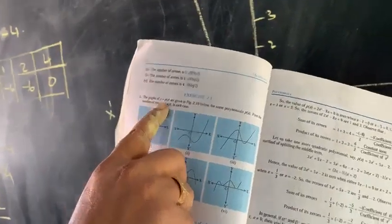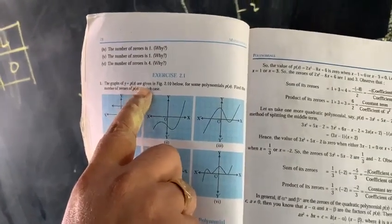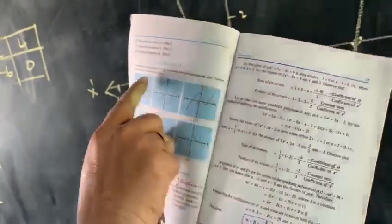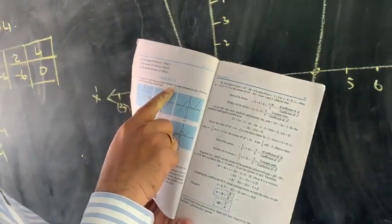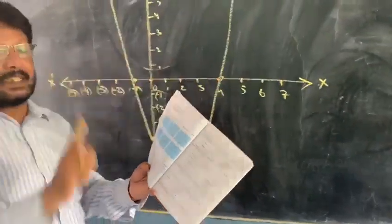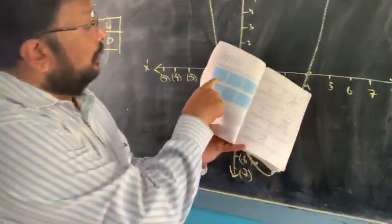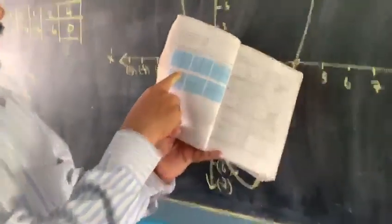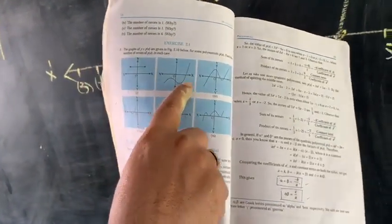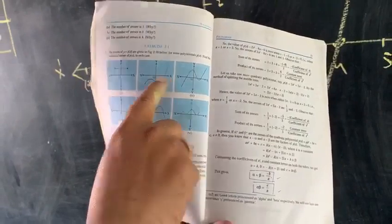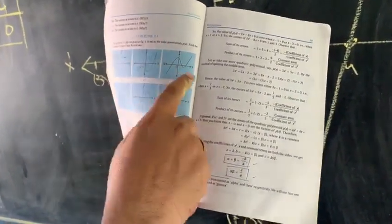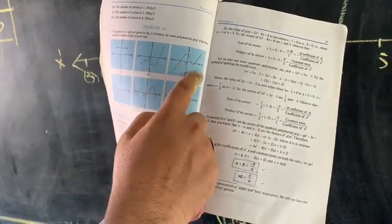See what is the question? In the graph, y is equal to p(x) are given, and for some polynomials, find the number of zeros. So the number of zeros means how many places it intersects the x-axis. Here, the first graph: none — zero. See the second graph: it will be one. And in the third graph, it is one, two, and three — the answer will be three zeros.